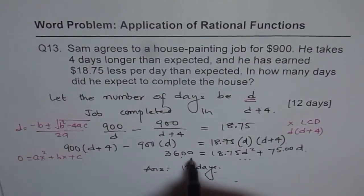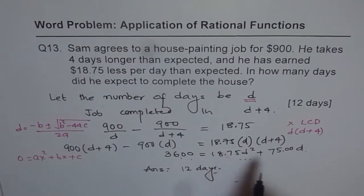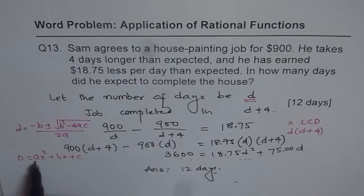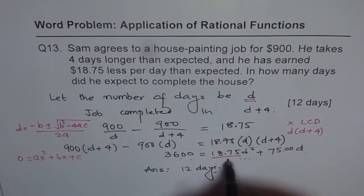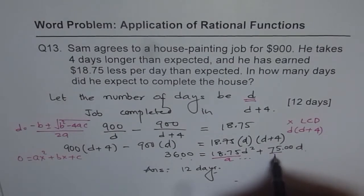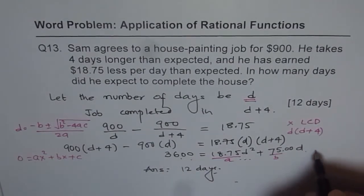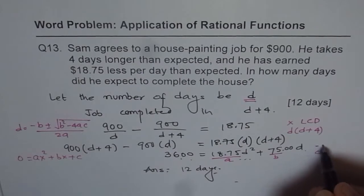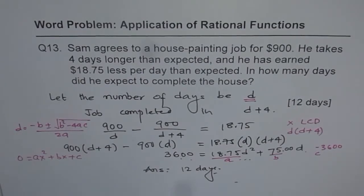So we'll bring this on that side, becomes 0. And the coefficients will be ABC. So D squared is 18.75 is your A. Do you see that? B is the coefficient of D. 75 is B. And when you bring it there, then C will be minus 3600. Plug in all these values and get your answer.